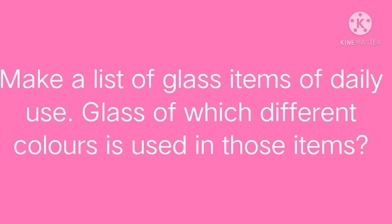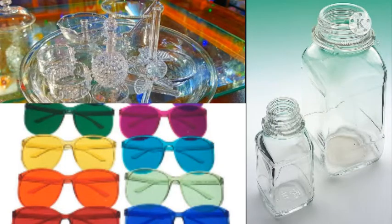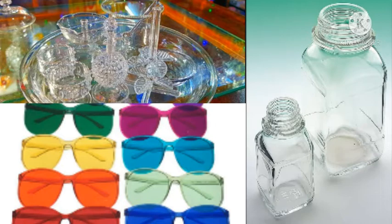Make a list of glass items of daily use and the colors of glass used in those items. Glass items used in our day-to-day life include spectacles, drinking glasses, cups, saucers, plates, bowls, mirrors, lenses, etc. Glasses of spectacles are transparent, but those of goggles are dark. Medicine bottles have amber colored glass. Red, green, or blue colored glasses are used in decorative items.